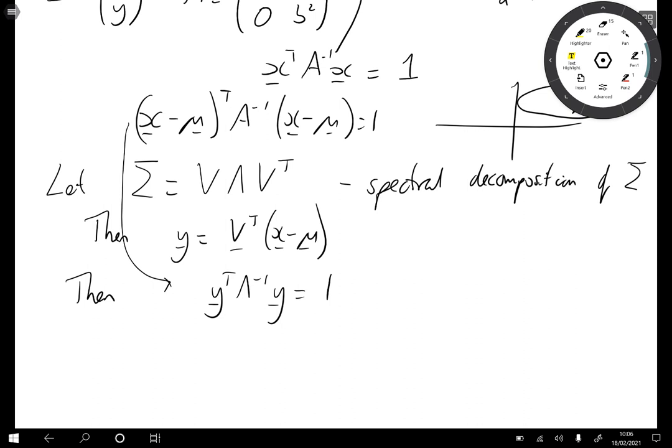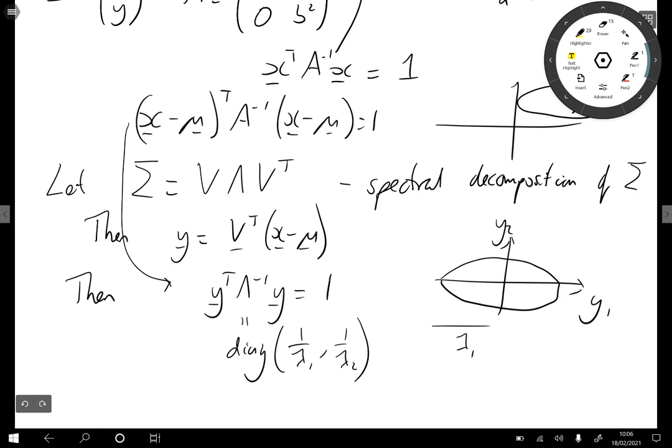So this is the equation of a standard ellipse. So this is a diagonal matrix. So if this is the y coordinates y1, y2, this is an ellipse with major axis of length proportional to λ1, minor axis of length related to λ2.